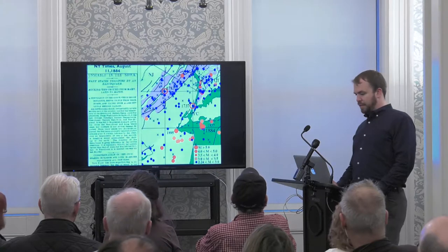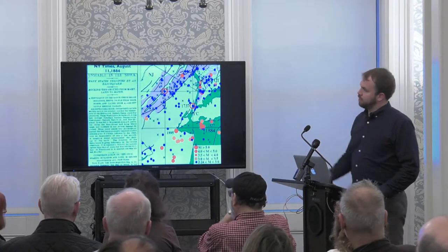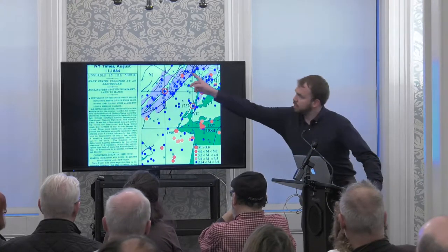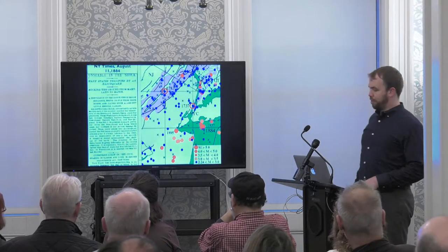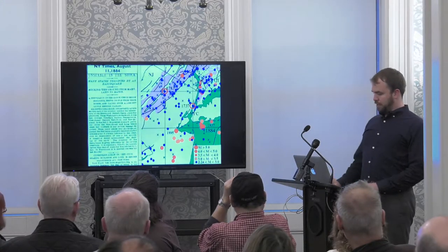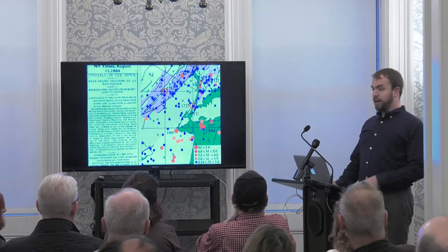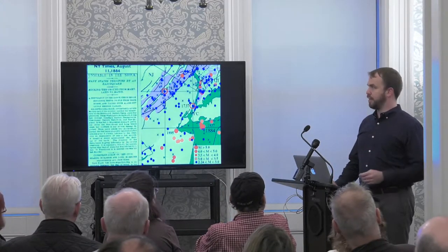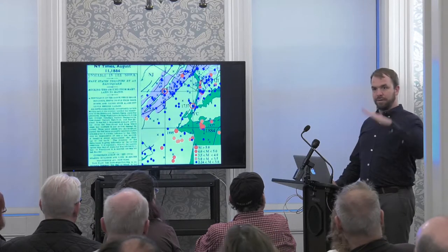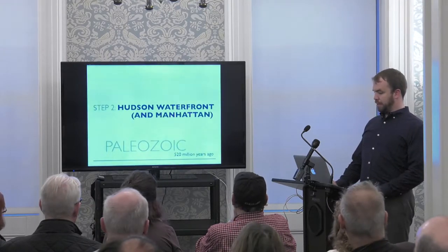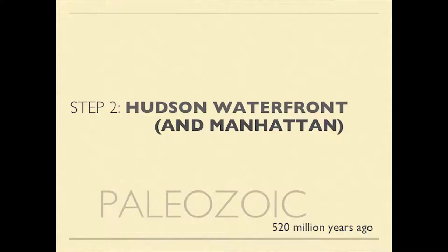The largest fault is the Ramapo fault, stretching right along the very edge of the Newark Valley. It's why the Newark Valley is a valley — a long time ago it dropped down. That's also why this area has so many earthquakes recorded since the 1600s, and we may one day feel such an earthquake ourselves.